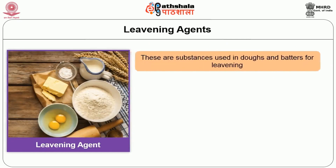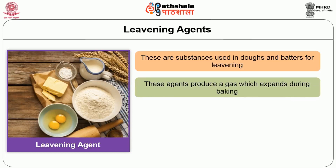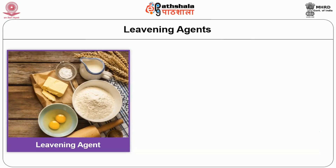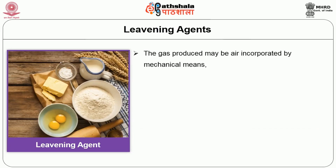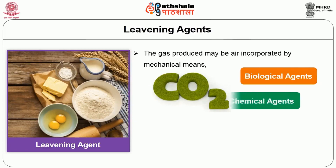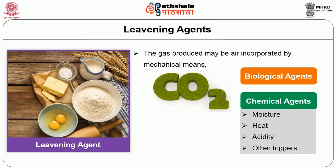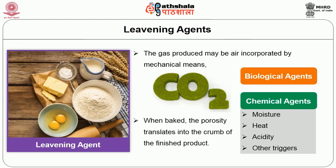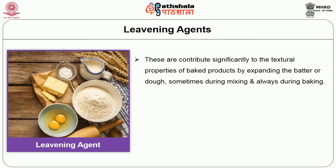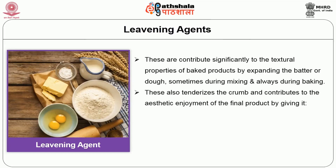Leavening agents are substances used in doughs and batters for leavening. These agents produce a gas which expands during baking, leave small holes in the baked product, and lighten and soften the finished product. The gas produced may be air incorporated by mechanical means, but usually it is carbon dioxide produced by biological agents or by chemical agents reacting with moisture, heat, acidity, or other triggers. When baked, the porosity translates into the crumb of the finished product. Leavening agents thus contribute significantly to the textural properties of baked products by expanding the batter or dough.